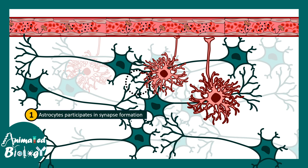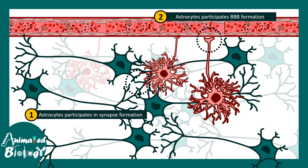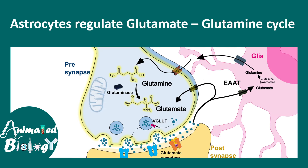There are two key functions of astrocytes. First, astrocytes participate in synapse formation — astrocytes along with neurons form the tripartite synapse. Astrocytes also touch blood vessels and form the blood-brain barrier, acting as a checkpoint for nutrient uptake from blood to brain and preventing harmful pathogens from entering. Astrocytes regulate the glutamate-glutamine cycle inside the neuron, modulating synaptic function. Glutamate is the key neurotransmitter in our nervous system, and astrocytes regulate glutamatergic synaptic transmission.